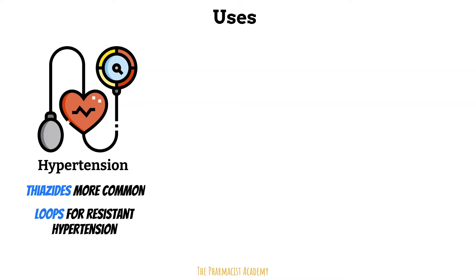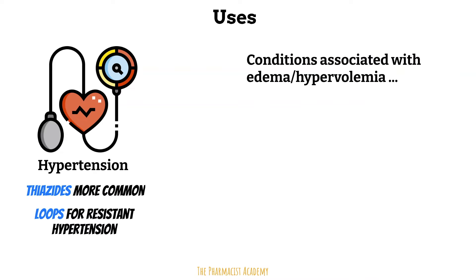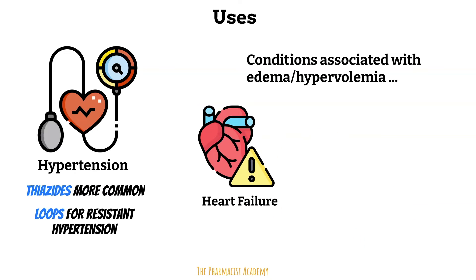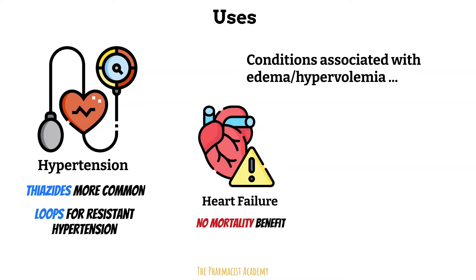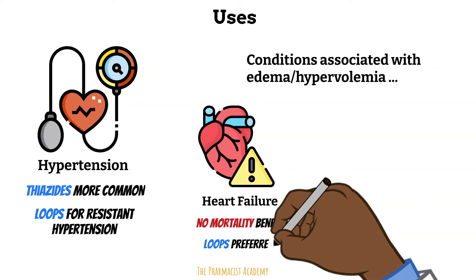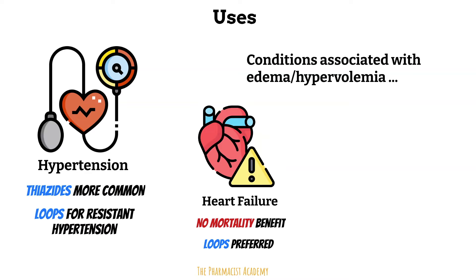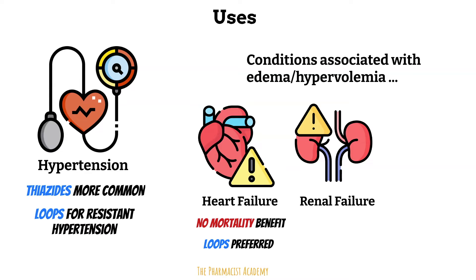By the way, I have a video on hypertension — I'll include the link above. Now, synonymous with other diuretics, we also use loop diuretics to manage conditions associated with fluid overload. This includes heart failure, where the heart is unable to pump blood out effectively, causing blood to build up in the vessels. This increases pressure within the vessels, leading to fluid leaking out into the tissues. Although they do not reduce mortality long-term, they decrease daily symptoms and increase exercise tolerance. Loop diuretics are preferred because of greater diuretic capabilities and because they retain efficacy with decreased renal function. Renal failure — simply because the kidneys are not able to remove excess fluid from the body, so we can use diuretics.